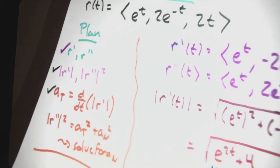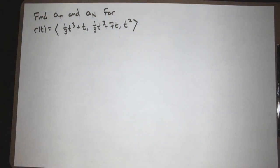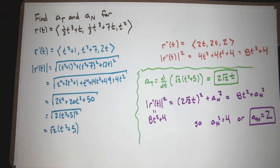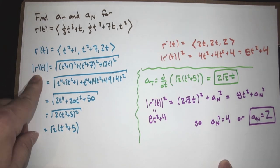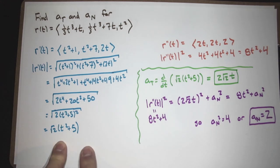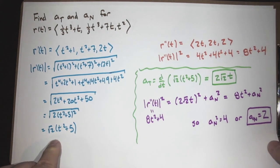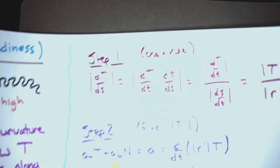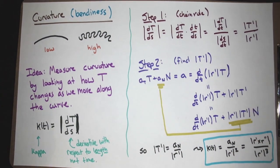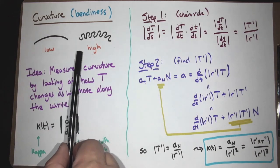Now we turn to another topic: curvature, also known as 'bendiness' — how bendy is your curve? In other words, how quickly is your curve turning? We're interested not in how the particle moves through time, but in the trail it leaves behind. We parameterize not by time but by arc length s, and ask: how quickly do we turn direction as we move along the curve?